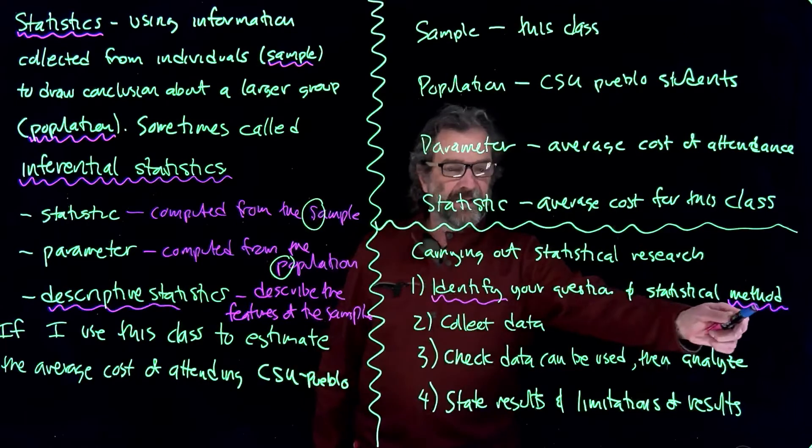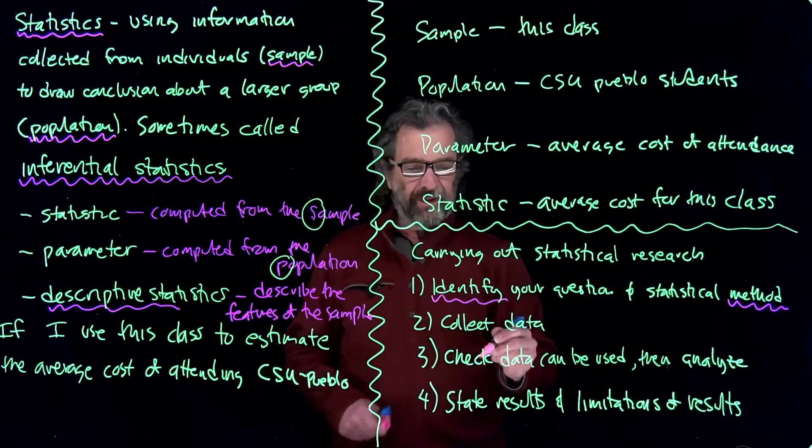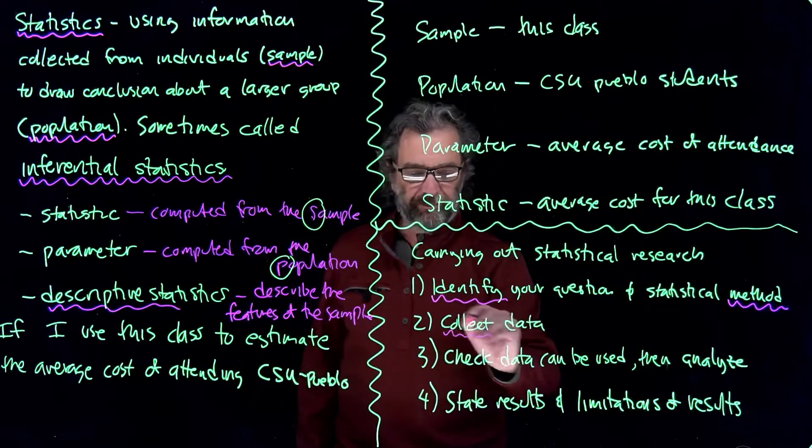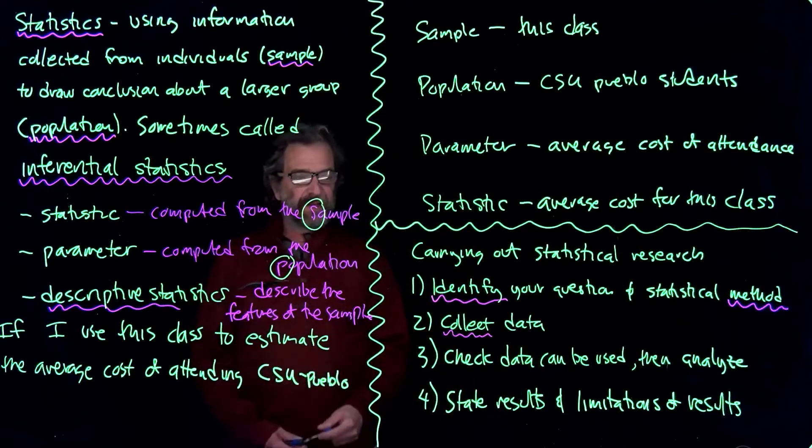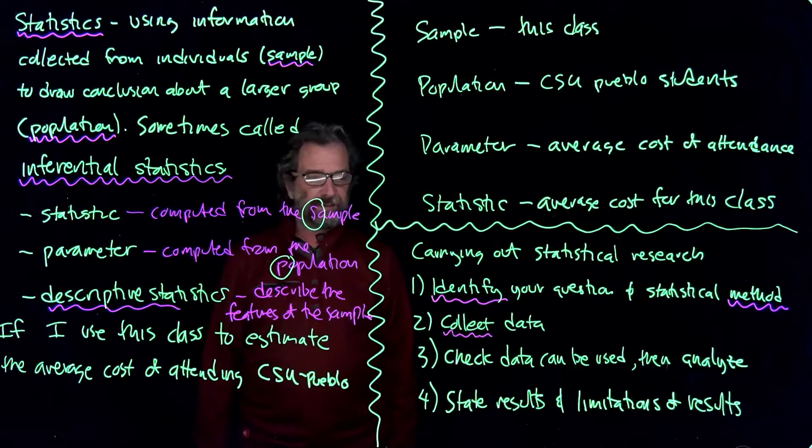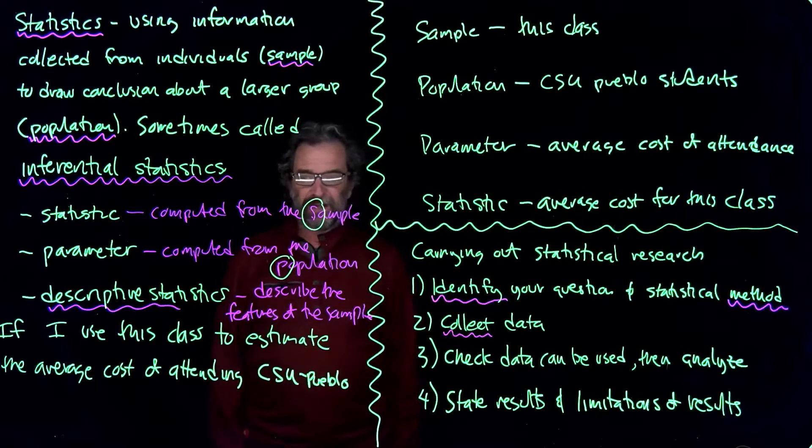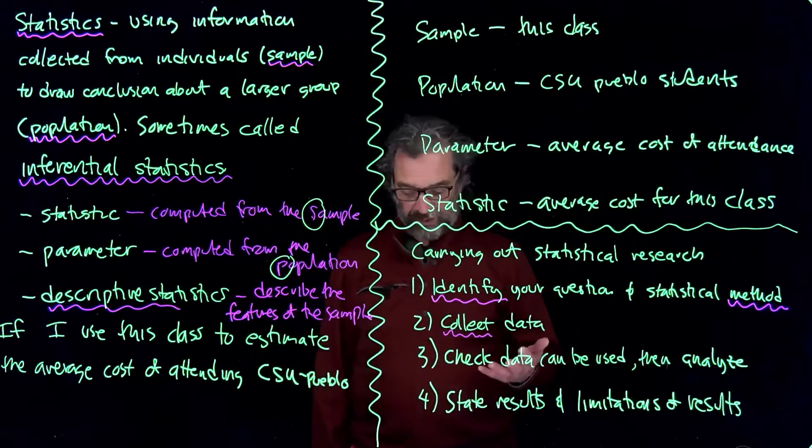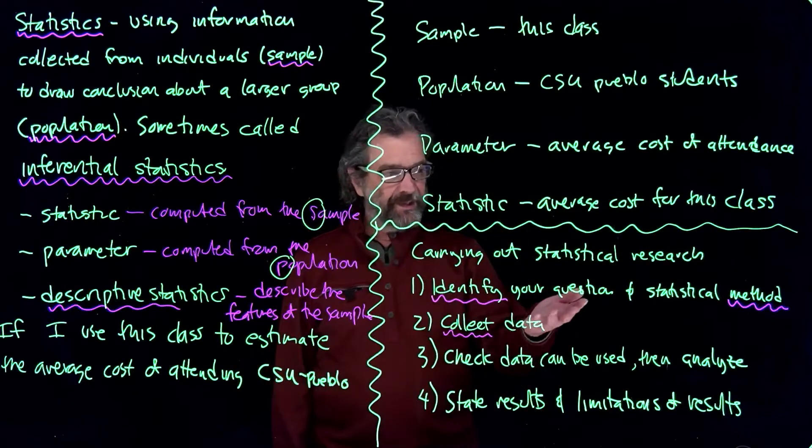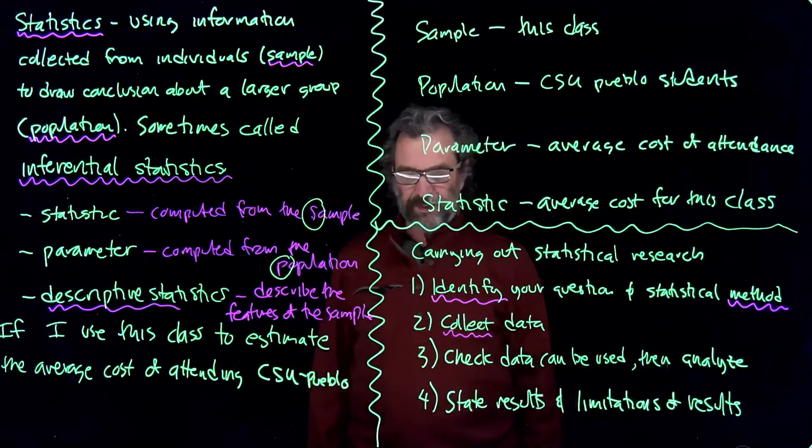Once you know how you're going to analyze it and what your question is, you can go ahead and collect the data. Now what happens then is sometimes that data is not amenable to your method. You expected something to happen, something else happened. The data you got, the way it showed up, didn't lend itself to the method you were using. You have to choose a different method.